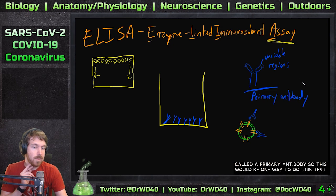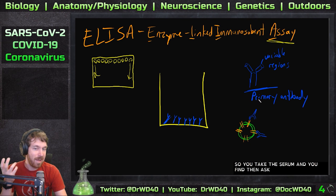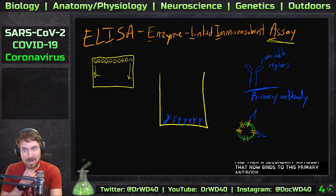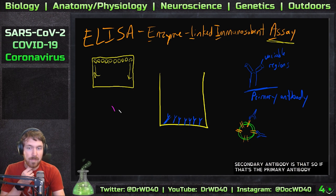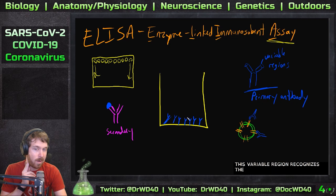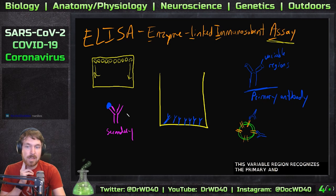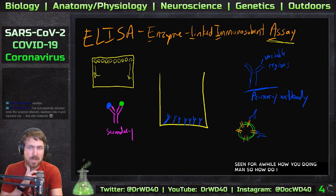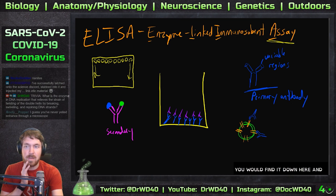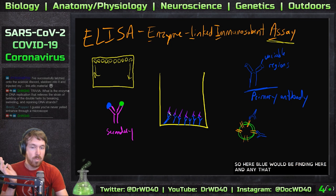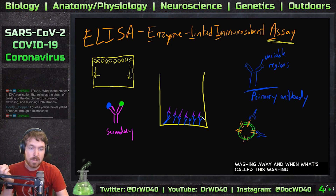This antibody is now called the primary antibody. We then find a secondary antibody that binds to the primary antibody. The secondary antibody's variable region recognizes the primary, and it contains a fluorescent dye. We add this into the solution and it binds down to the primary antibody. Any secondary antibodies that don't bind are removed during what's called the washing step.